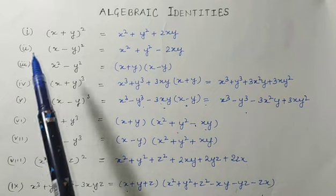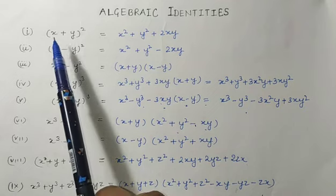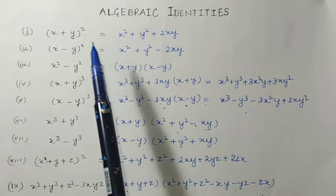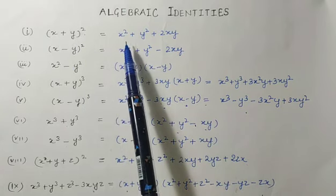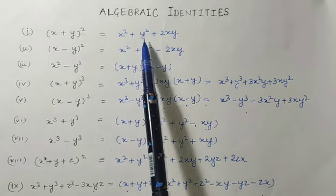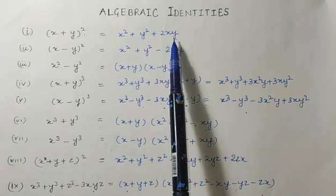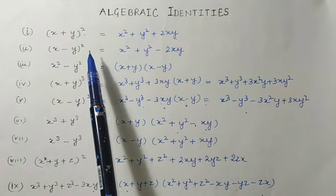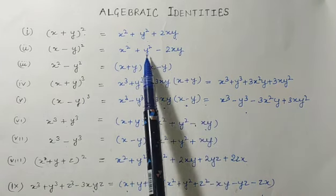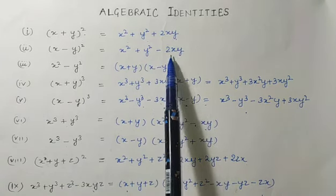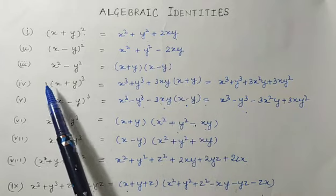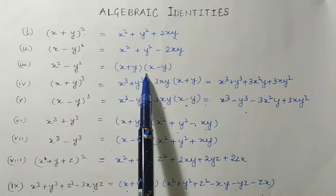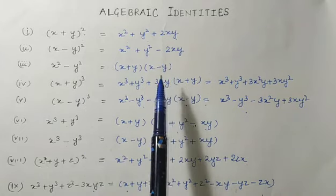The first algebraic identity is: (x + y)² = x² + y² + 2xy. The second is: (x - y)² = x² + y² - 2xy. The third is: x² - y² = (x + y)(x - y).